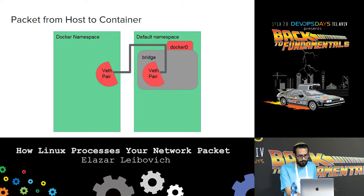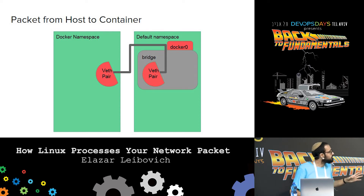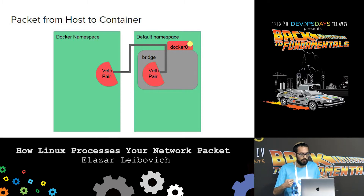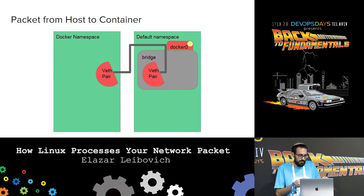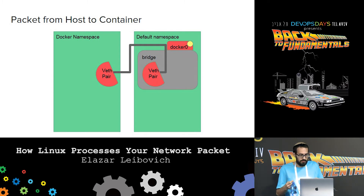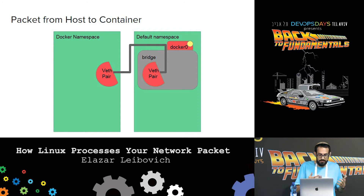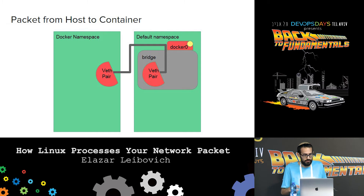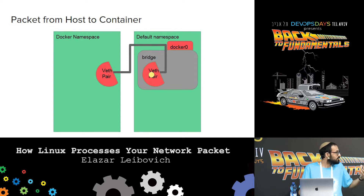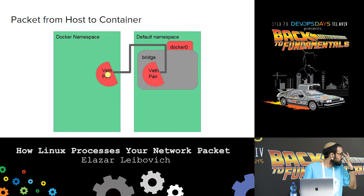So let's see a simple example. To your left you can see the default namespace — our laptop. To your right, the Docker namespace. We're sending a packet whose destination IP is our container's IP. Linux finds out it needs to send this packet through the bridge, usually called Docker 0. It sends it to the network interface of the bridge, the bridge moves it to one end of the veth pair, the veth pair moves it to the other end, and that's how the packet reaches the container.